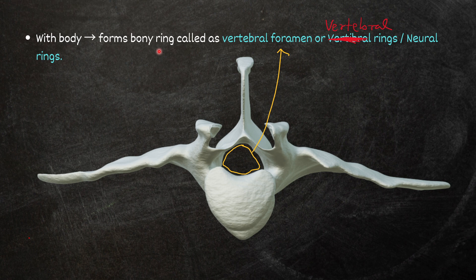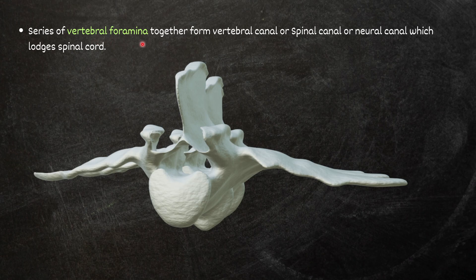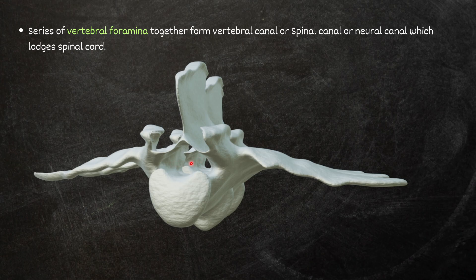The neural arch together with the body forms a bony ring called the vertebral foramen, vertebral ring, or neural ring. A series of vertebral foramina together form the vertebral canal or spinal canal or neural canal, which lodges the spinal cord.